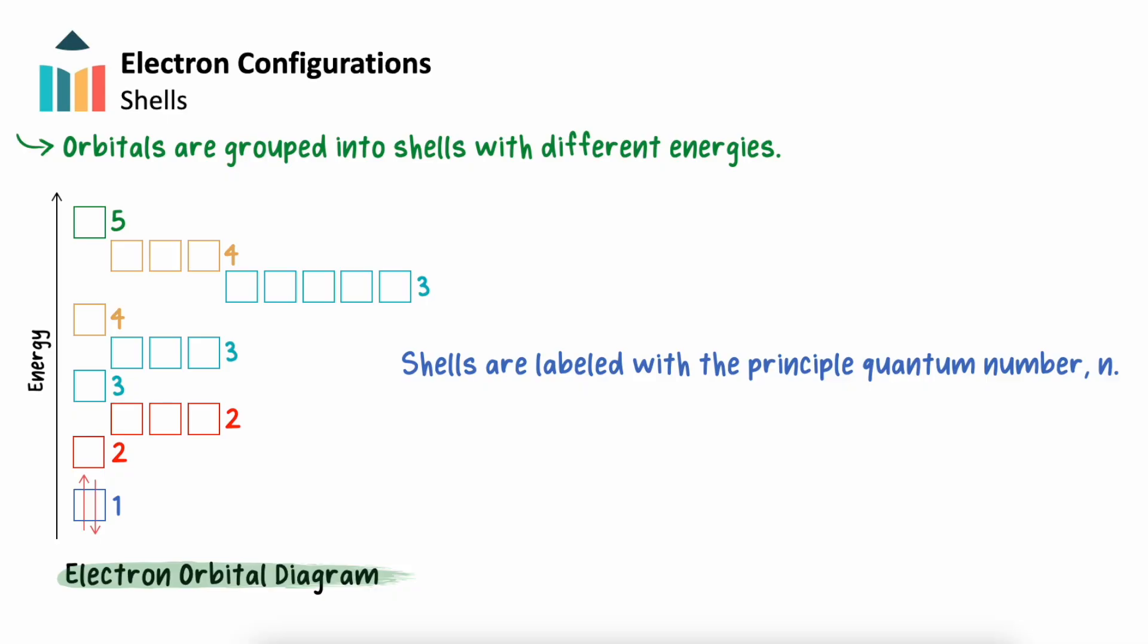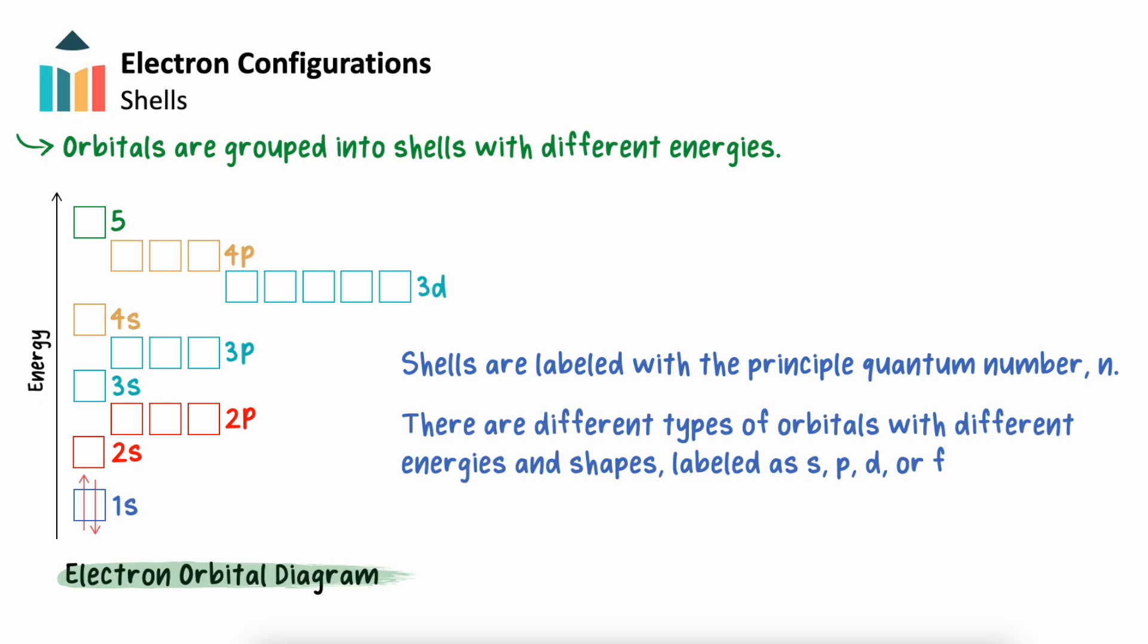In each shell, there are different types of orbitals with different energy levels. These are labeled with the letters S, P, D, or F. The number of different orbital types increases with the shell number N. Shell 1 contains only S orbitals. Shell 2 contains S and P. Shell 3 contains S, P, and D, and so on.